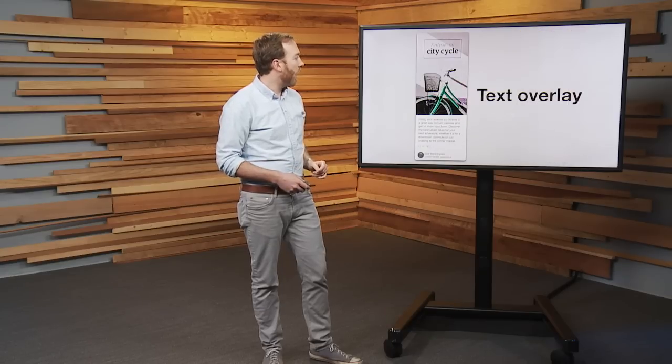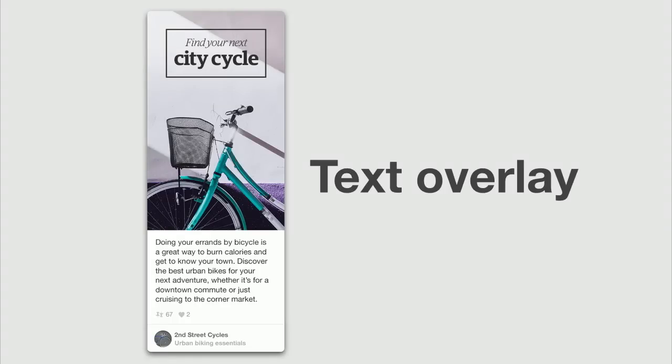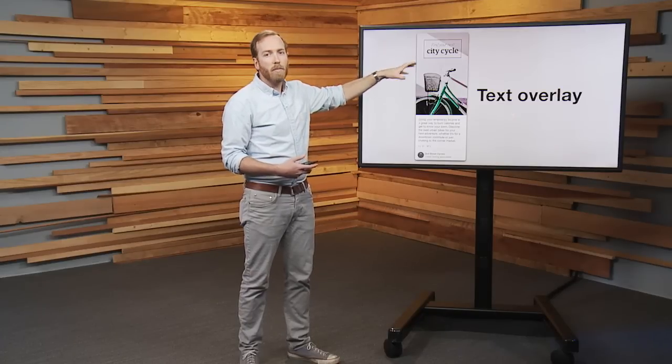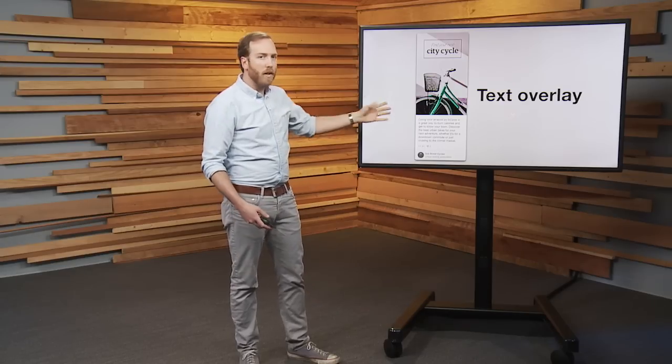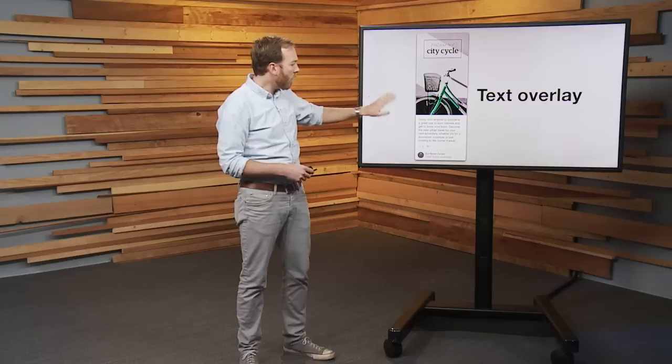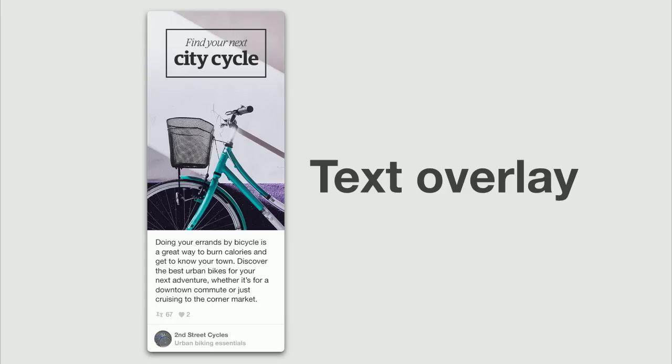Okay, let's dive into the next one, and that is a text overlay. You don't always need to do a text overlay, but there are times when the image itself isn't perfectly self-explanatory. Like this one. It's a picture of a bike. Now if I'm skimming through Pinterest, I might think this is just a pretty photo of a bike, I might think this is about bike trails. There's lots of different things this could mean. And the fact that it says up here in the text overlay, find your next city cycle, gives me an indication that I can expect that this pin is going to help me to find a bike to buy. And then let's look at this description too, because the description is always very important. Doing your errands by bicycle is a great way to burn calories and get to know your town. Discover the best urban bikes for your next adventure, whether it's for a downtown commute or just cruising to the corner market.